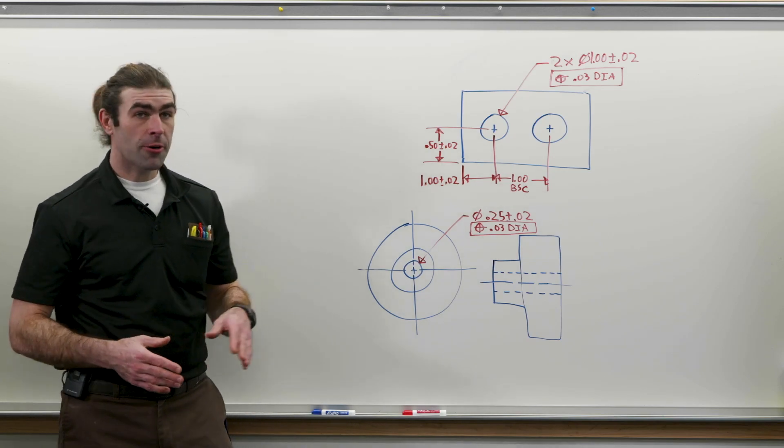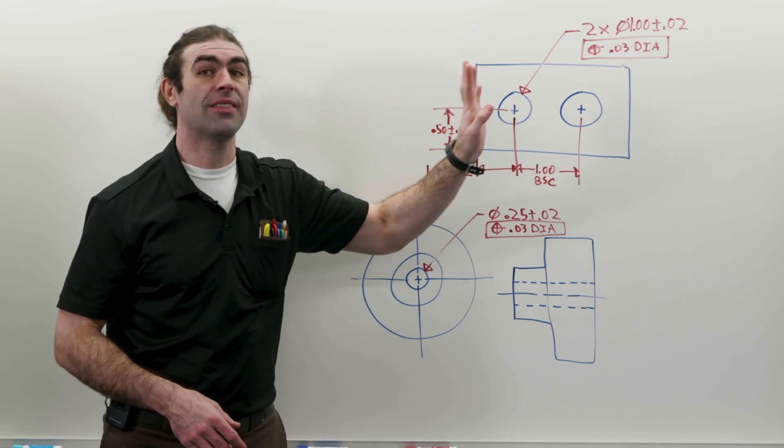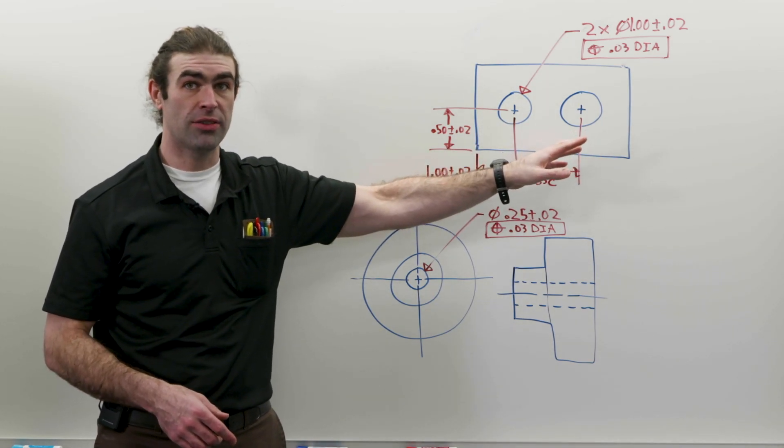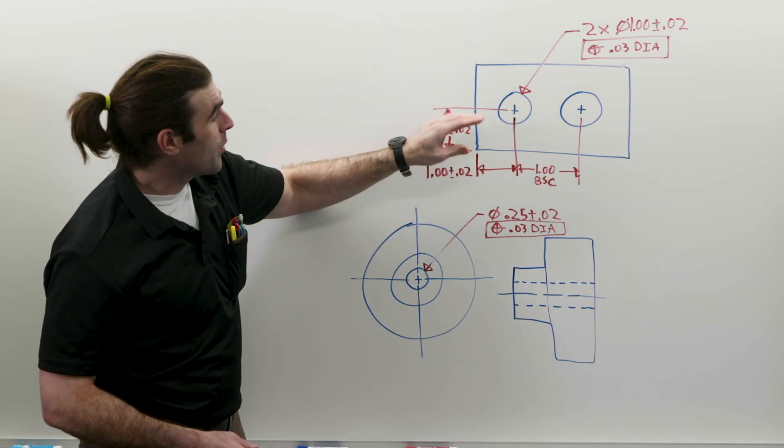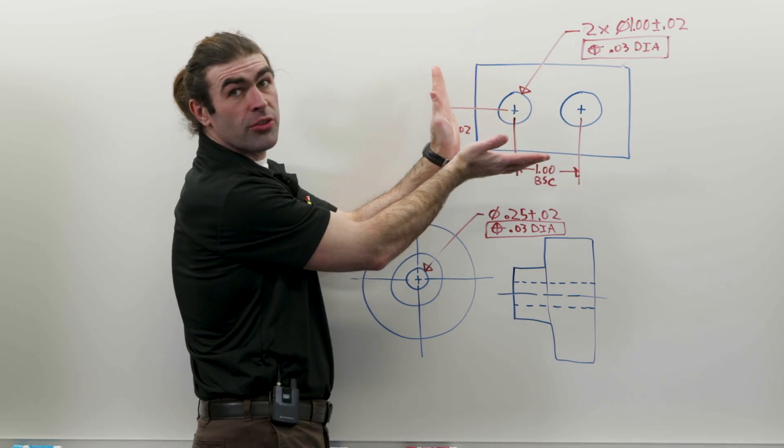I've got an example here. We've got a position tolerance, and it's written funny because that's how they did it in the 1973 standard. We would assume in this part that this is a datum and this is a datum, straightforward enough.